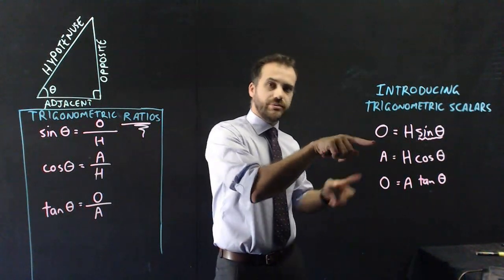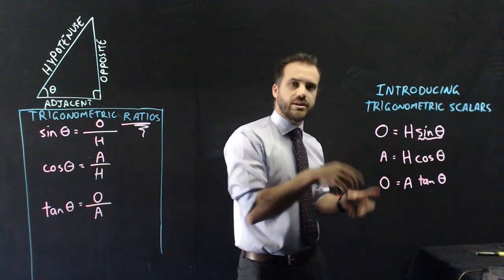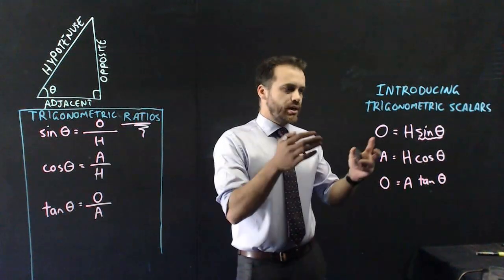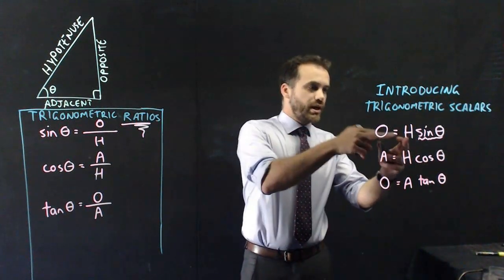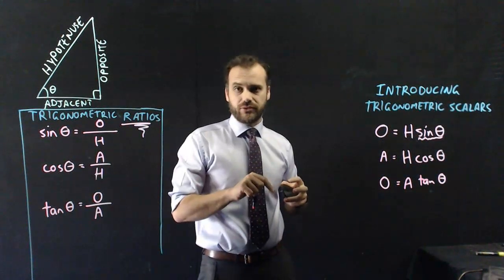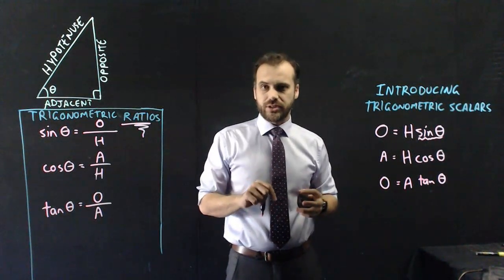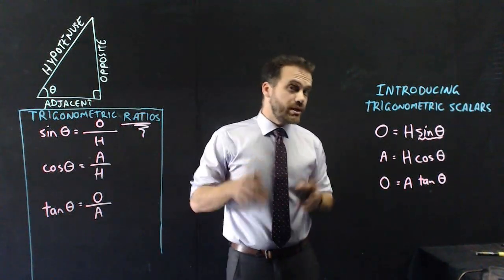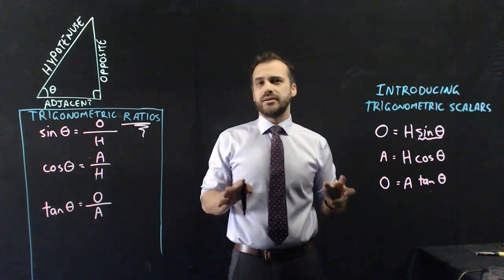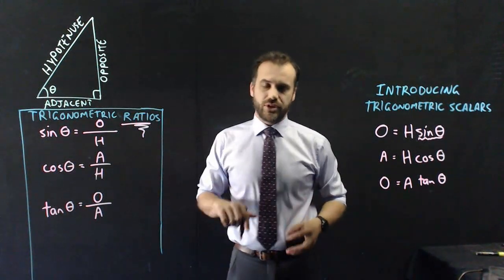If you're trying to find the opposite, you don't have to rearrange it. Put some numbers in here and you know what the opposite is. If you want to find the H and you know those two things, then yes, you are going to have to rearrange it. If you want to know theta, then yes, you are going to rearrange it. But rearranging two out of three times is way, way better than rearranging three out of three times.